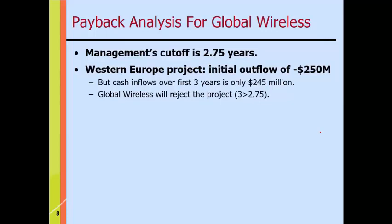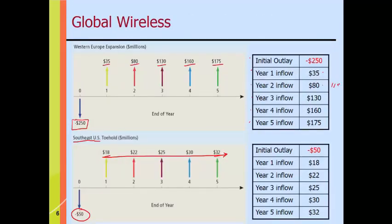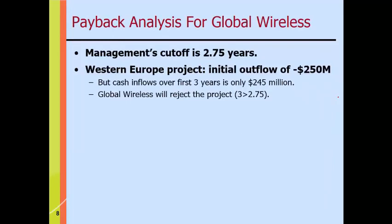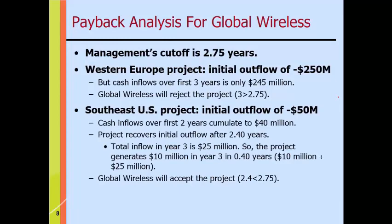For the Western Europe project, we need to recover $250 million. Over the first three years we only get $245 million back ($35 + $80 + $130), so we don't recover the $250 million within three years, much less 2.75 years — we reject that project. For the Southeast U.S. project, we need to recover $50 million. We get $40 million in the first two years and need only $10 million more; the year-three cash flow is $25 million, so it's 10/25 = 0.4 of a year extra, meaning full recovery in 2.4 years — less than 2.75, so we accept that project.